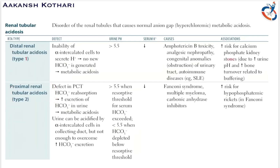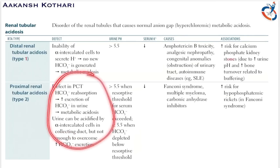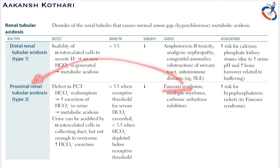In proximal renal tubular acidosis, type 2 RTA, the primary defect is impaired reabsorption of bicarbonate in the proximal convoluted tubule. Since bicarbonate is not reabsorbed, it is excreted in the urine leading to metabolic acidosis. The urine can be acidified by the alpha intercalated cells in the collecting ducts, but not enough to overcome the increased bicarbonate secretion. Fanconi syndrome, covered in the renal tubular defects module, is a cause of proximal RTA.